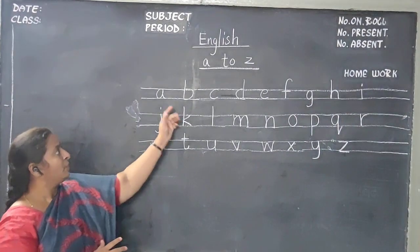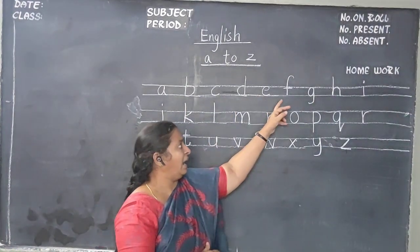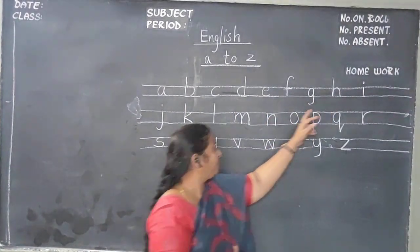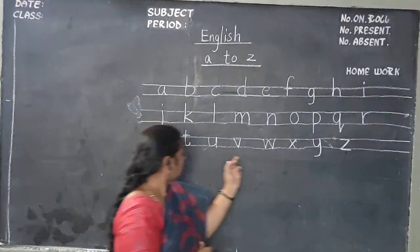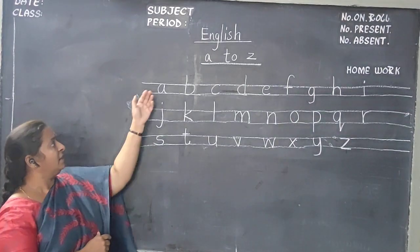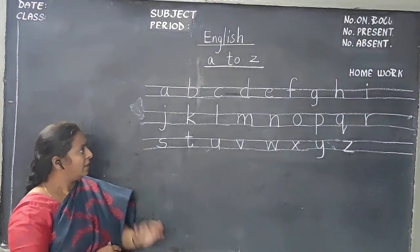Now, upper zone letters. See once. B, D, F, H, K, L, T. These are upper zone letters. If they start from upper zone and they end in the middle zone.